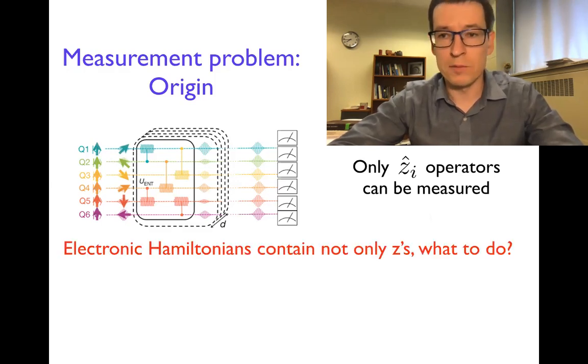Now, electronic Hamiltonians, as we know it, they don't only contain z operators, they contain all sorts of Pauli products with x, y, and z. So what do we do in this case?